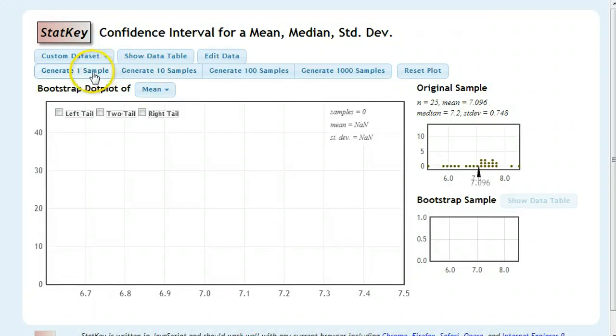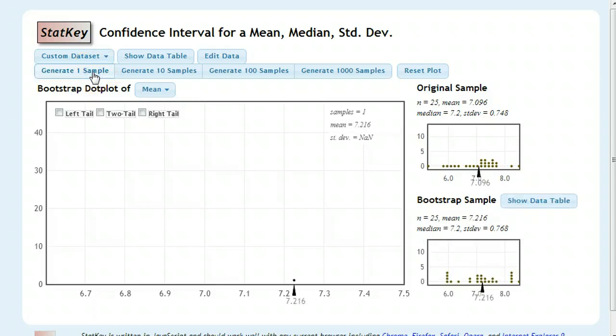Now, just like before, we're going to generate our samples, our re-samples. And the first one here I got was 7.216. And what that really represents is it took 25 from the copy-pasted population up here and randomly selected them to be part of this new sample.